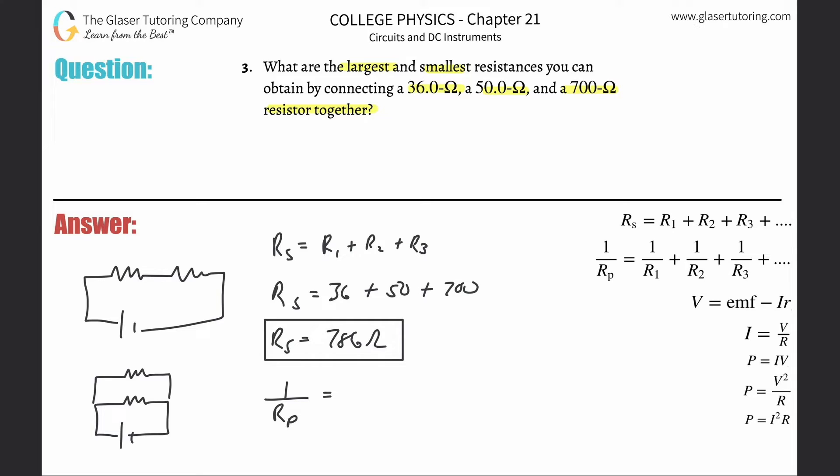Hopefully it'll make sense here based on the picture. Obviously I'm talking about three resistances here in the problem but I only detailed two, but it wouldn't matter. If anything it'll just compound the effect. So 1 over R_p will be equal to 1 over R_1 plus 1 over R_2 plus 1 over R_3.